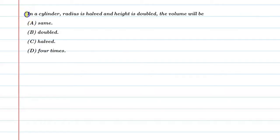Hello students, let's solve this question. In a cylinder, radius is halved and the height is doubled, then the volume will be? So basically, this question says that there's a cylinder whose radius we have made half and height we have doubled, so tell what effect will occur on its volume.